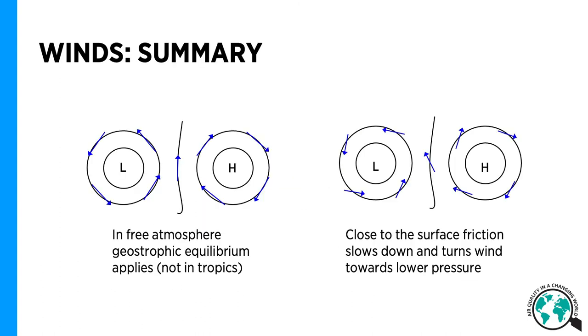To summarize, in free atmosphere, geostrophic equilibrium applies and winds flow according to the isobars, counterclockwise around low pressure and clockwise around high pressure. The geostrophic equilibrium does not apply to the tropics, where there is no Coriolis effect. Close to the surface, friction slows down the motion and turns the wind towards the lower pressure.